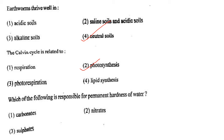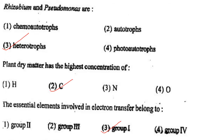Next one: Which of the following is responsible for permanent hardness of water? Option 1, carbonates; option 2, nitrates; option 3, sulfates; option 4, all of them. Answer: all of them are responsible for permanent hardness of water.